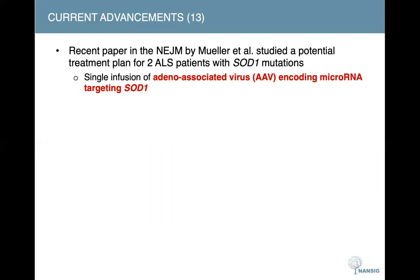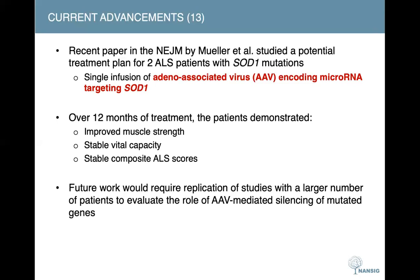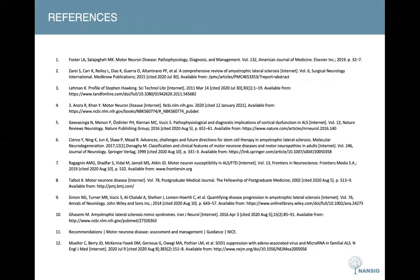Coming to the last slide on current advancements: we recently came across a paper in the New England Journal of Medicine by Mueller and his team. They trialed a potential treatment on two ALS patients with SOD1 mutations, delivering a single intrathecal infusion of viruses encoding micro-RNA that targets and destroys SOD1 proteins accumulated in neurons. Outcomes showed patients remained stable throughout the 12-month follow-up with some improvement in muscle function. However, the stability observed could be due to slow disease progression itself, so future studies need to determine results in a larger number of patients with SOD1-mutant ALS.